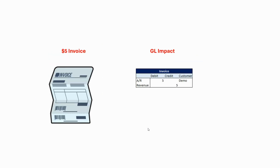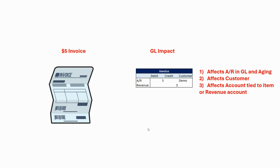Now before we dive into what will happen to the suspense accounts, let's first discuss what happens when you create an invoice or a bill in NetSuite. At least three things will happen: the accounts receivable account will be affected — in this case a five dollar invoice will increase my accounts receivable by five dollars — the corresponding customer will be tied to the transaction so the aging report will be accurate, and third, the revenue account tied to the item will be affected.